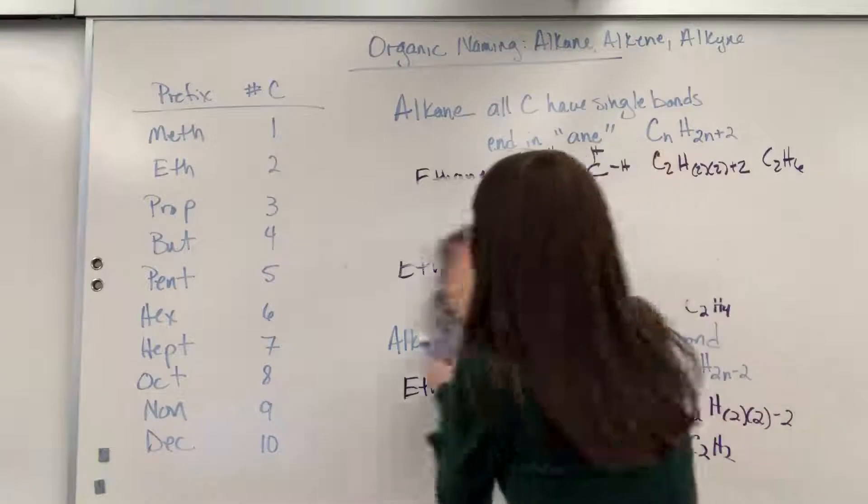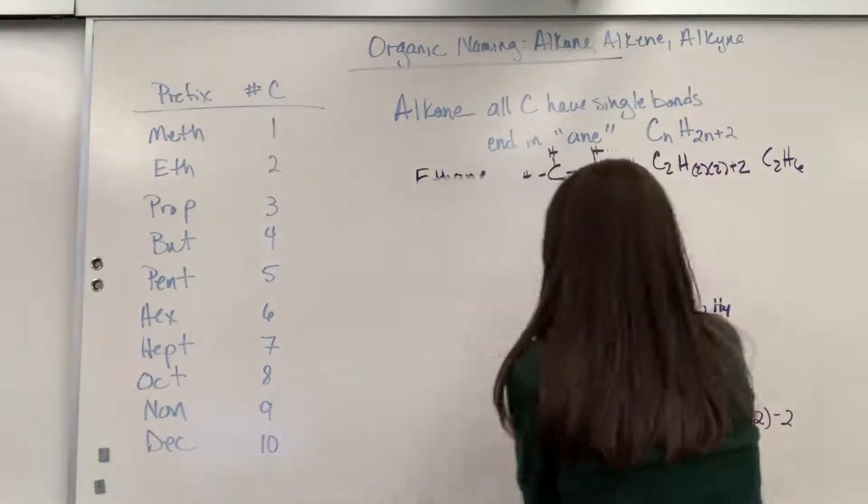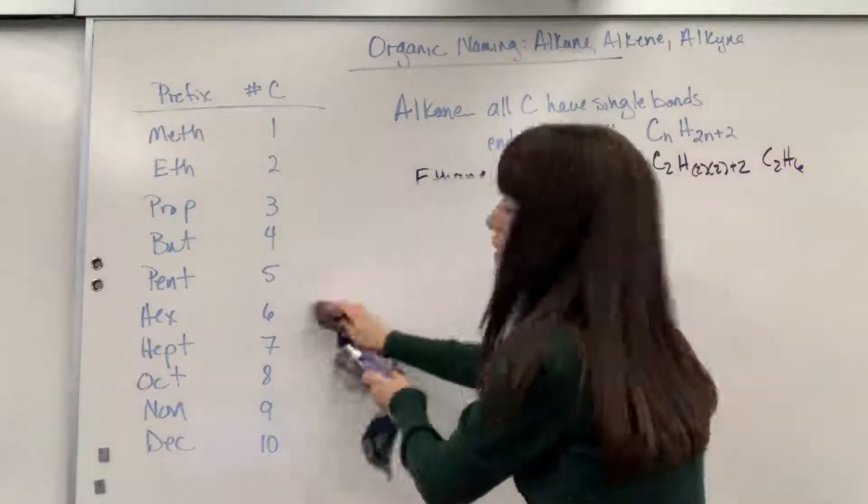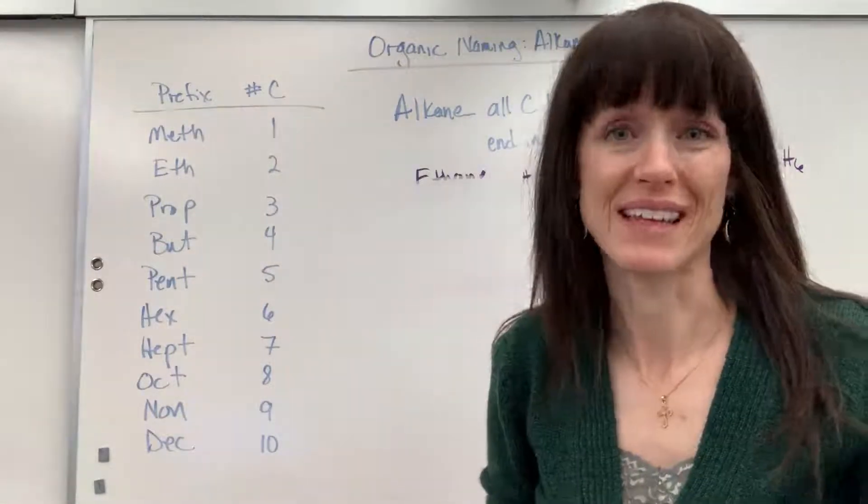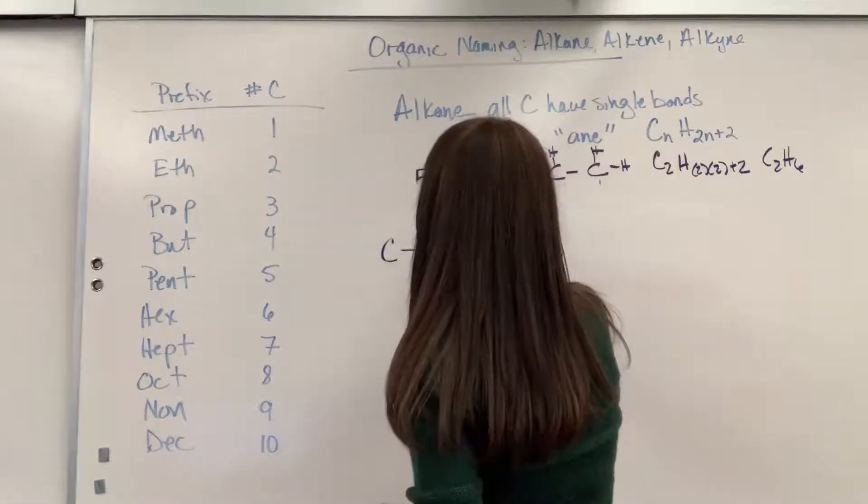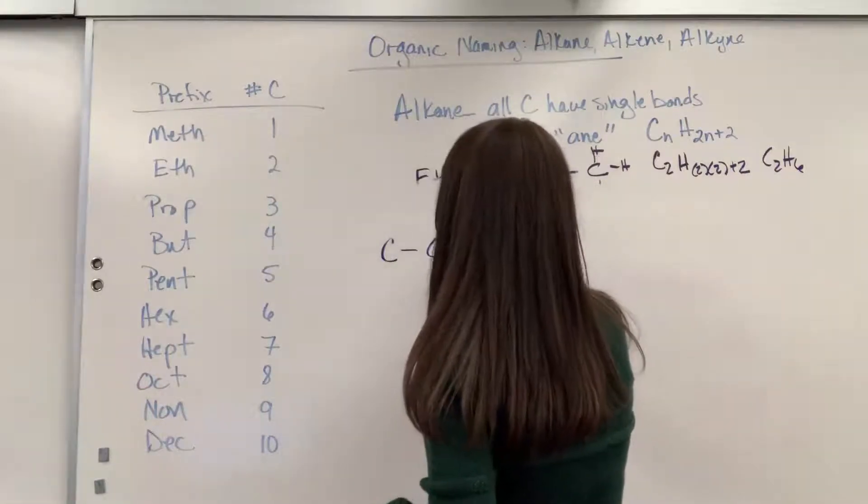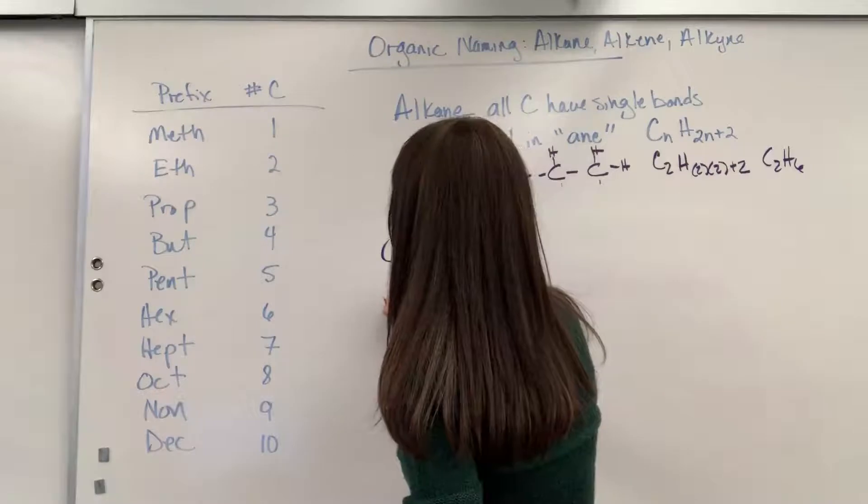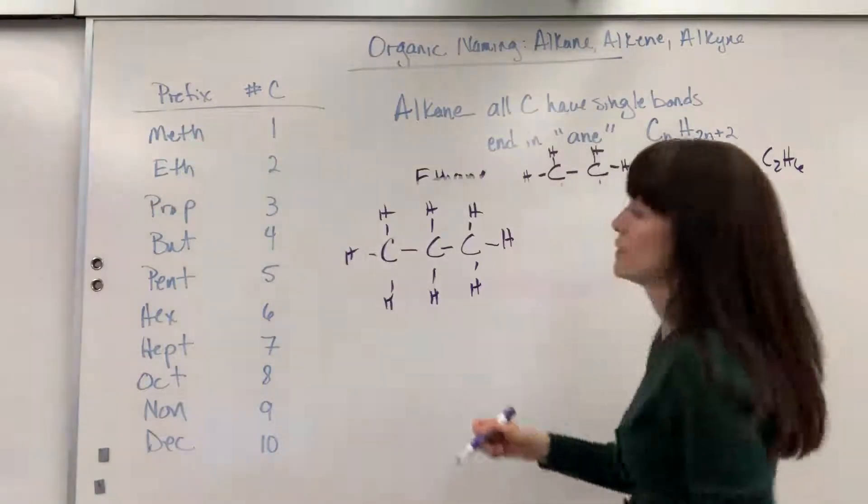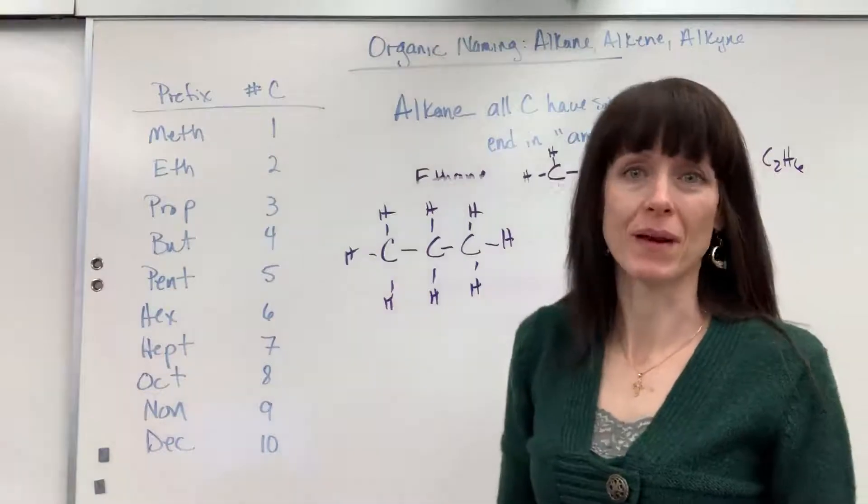So we're going to remember all of this. I'm going to go ahead and make some room for us. I'm going to put up a couple of formulas for you of alkene, alkyne, and alkane. We're going to have three carbons, and I want to name these.